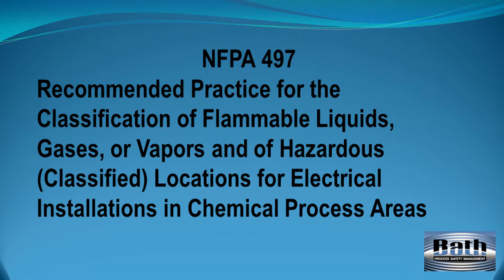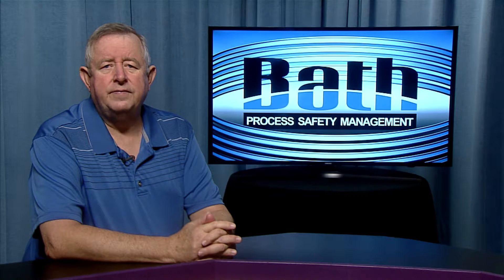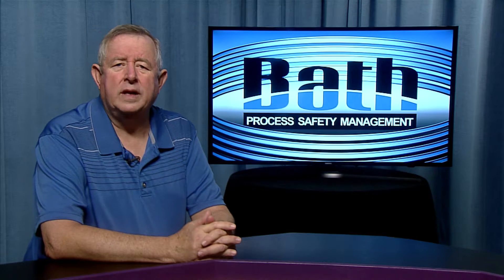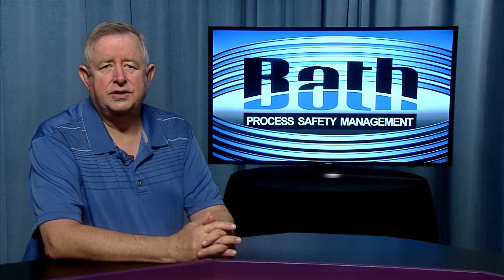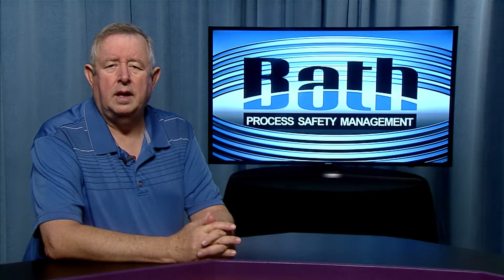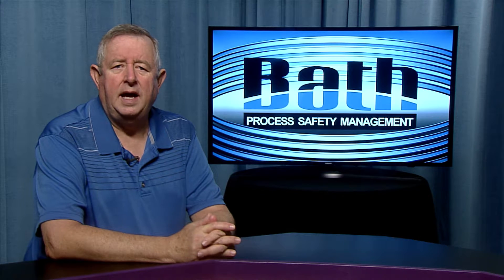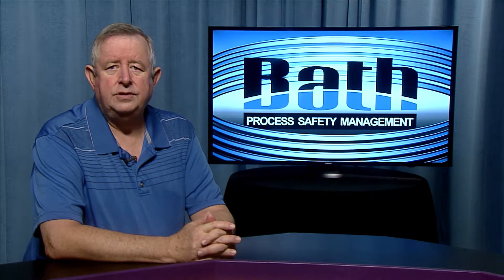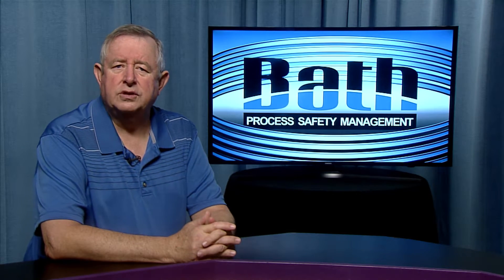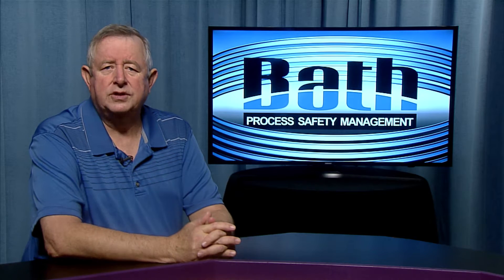The title of NFPA-497 is Recommended Practice for the Classification of Flammable Liquids, Gases or Vapors of Hazardous Classified Locations in Electrical Installation in Chemical Process Areas. Note that both of these documents cover Class I locations only, as defined by the National Electrical Code, NFPA 70, and do not cover those with combustible dust, which are Class II locations, or ignitable fibers and flyings that are Class III locations.